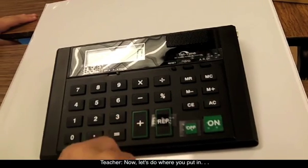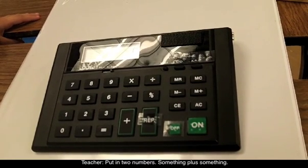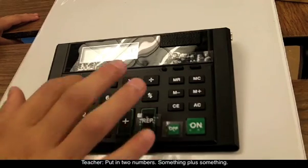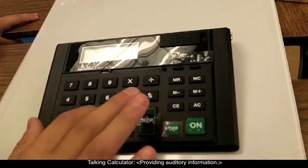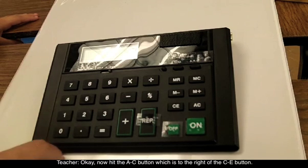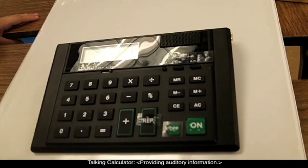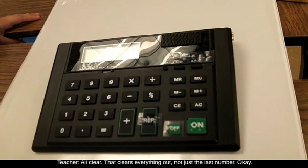But now let's clear that. If you hit C-E twice, it clears everything. So hit it again there. It's clear. Clear. Now let's do where you put in two numbers, something plus something. Four. Plus. Three. Now hit the A-C button, which is to the right of the C-E button. All clear. All clear. That clears everything out, not just the last number.